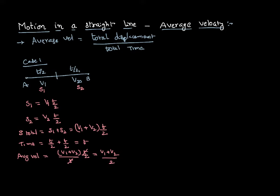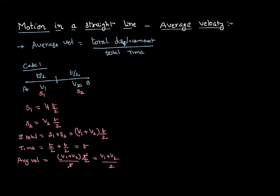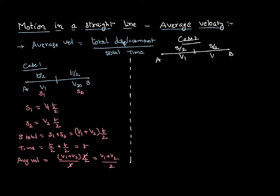Now let us find the average velocity in another scenario — Case 2 — where the body is starting from point A going to point B, but in such a way that for half of the displacement it is moving with velocity V1, and for the remaining half of the displacement it is moving with velocity V2. We are asked to find the average velocity.